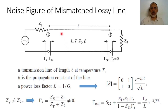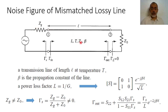Assume that we have a lossy transmission line with loss factor L and temperature T, characteristic impedance Z₀, wave propagation constant β, and length L. This transmission line section has port 1 terminated by a source with characteristic impedance Zg, and as a general case the value of Zg does not equal Z₀, so this is mismatched.